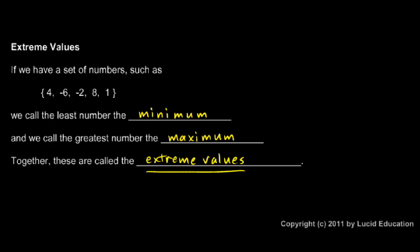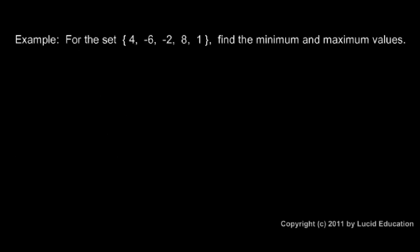And again, that terminology should make sense also. So let's look at this set: four, negative six, negative two, eight, and one. Only five numbers in that set. We're told to find the minimum and maximum values.